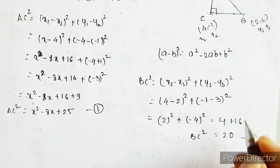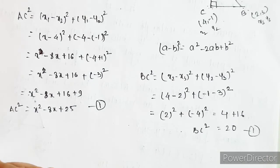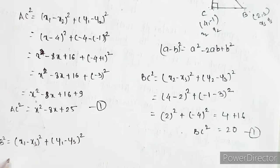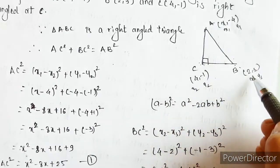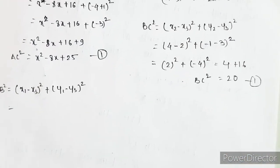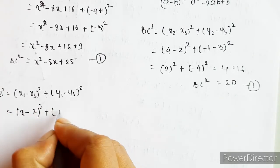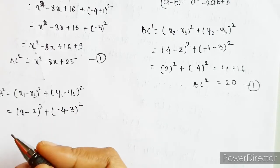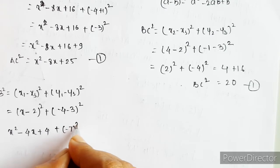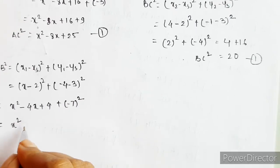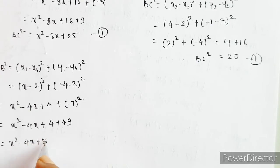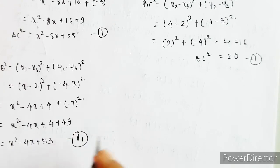Next, we need to find AB². AB² = (x1 - x3)² + (y1 - y3)². So, x1 is x, x3 is 2, y1 is -4, y3 is 3. This gives (x - 2)² + (-4 - 3)². Expanding: x² - 4x + 4 + 49, which is x² - 4x + 53. So AB² = x² - 4x + 53.